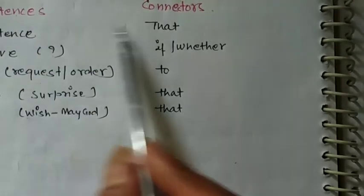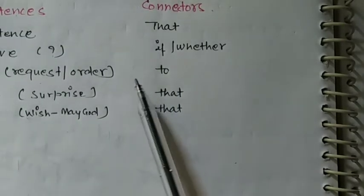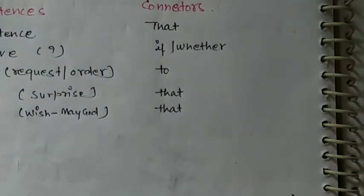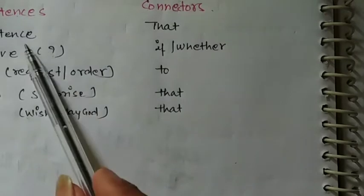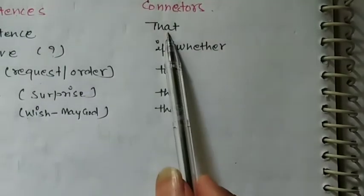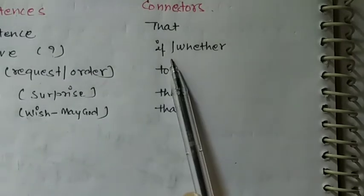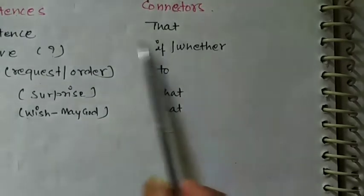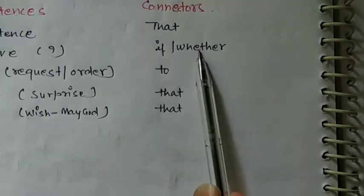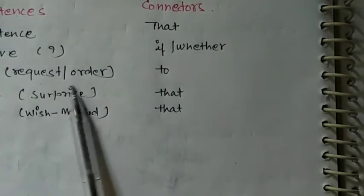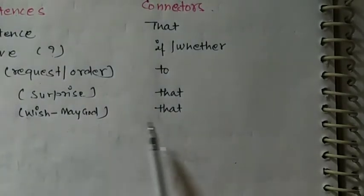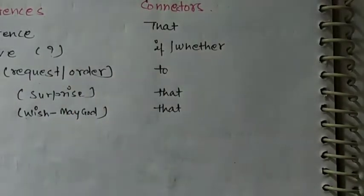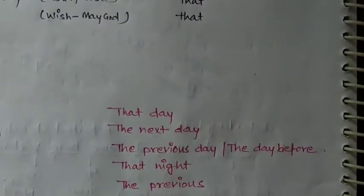Remember all the related connectors. If you learn all these charts you will definitely understand direct and indirect speech well. Sentence connectors: in simple sentences you will use 'that'. In interrogative sentences, two connectors are used — 'if' and 'whether'; you can use either one. In imperative sentences we will use 'to'. In exclamatory sentences we will use 'that'. In optative sentences we will also use 'that'.